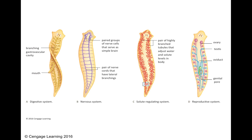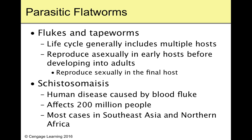I told you I was going to keep this video short, so we're not going to do planarian regeneration. Let's move on to some non-free-living flatworms — some parasites. There's flukes and tapeworms. Flukes and tapeworms are generally going to include multiple hosts to make it through one life cycle. They'll reproduce asexually in their first host and then develop into adults, get into the second host, and reproduce sexually in the second host, and then it starts over again.